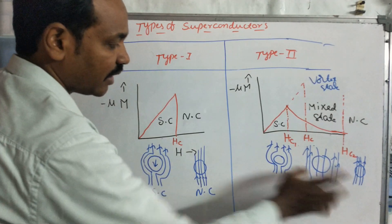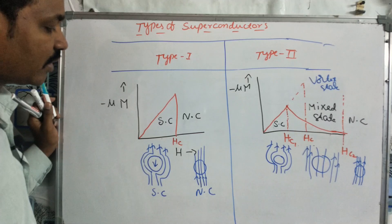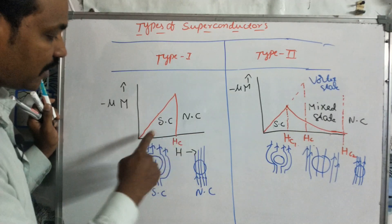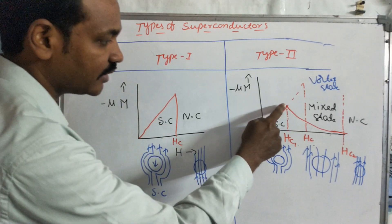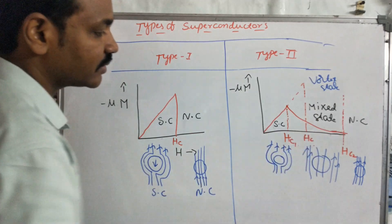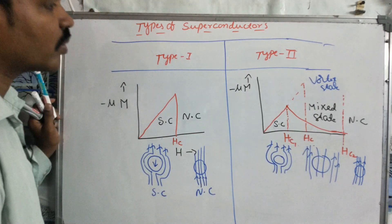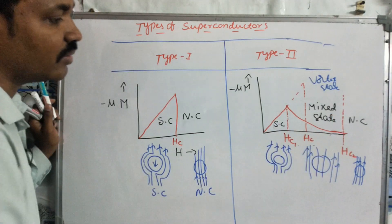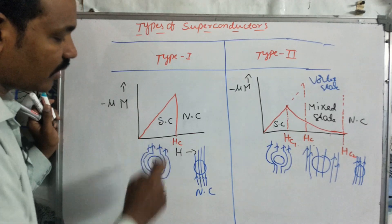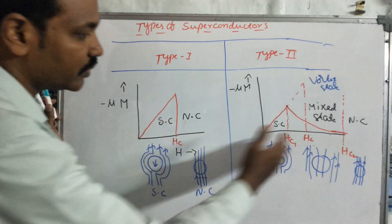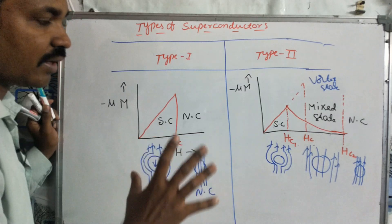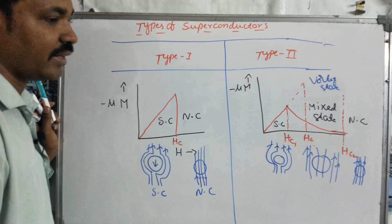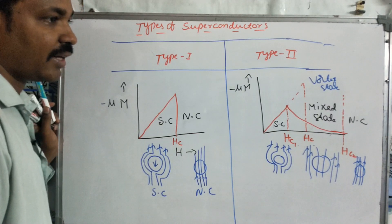This mixed state is very important for applications. The magnetic levitation train is one key application — it is more efficient and safe. The high critical field of Type 2 superconductors makes them very valuable for such applications.